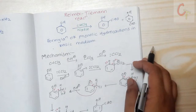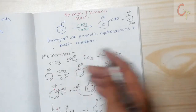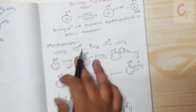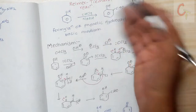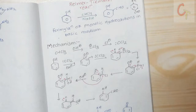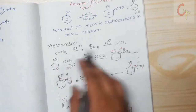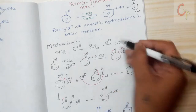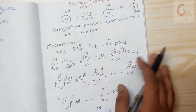There are two mechanisms: one for the ortho product and one for the para product. In the first step, when chloroform is treated with sodium hydroxide or potassium hydroxide, a carbene intermediate is generated. The base abstracts a proton from CHCl₃ to form CCl₃⁻, which then loses Cl⁻ to form :CCl₂ — a neutral reactive carbene species with one lone pair of electrons.